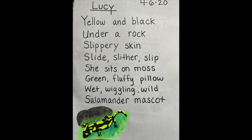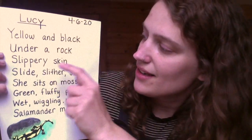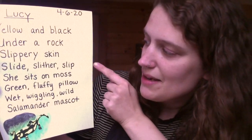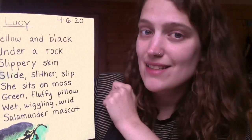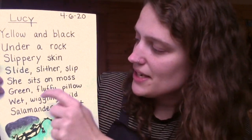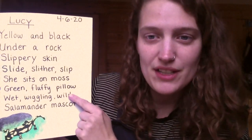Lucy: yellow and black, under a rock, slippery skin, slide slither slip. She sits on moss, green fluffy pillow, wet wiggling wild, salamander mascot. Did you hear any patterns? I tried to make some patterns by using the same beginning sound. Slippery, slide, slither, slip — I tried to use a lot of S sounds. And down here, wet, wiggling, wild — I tried to use a lot of W sounds. So that's how I made a pattern.